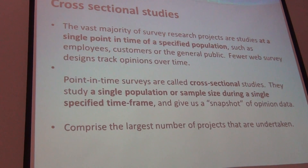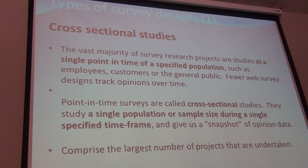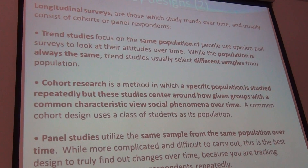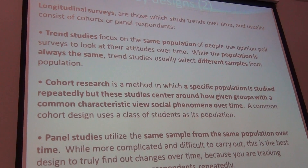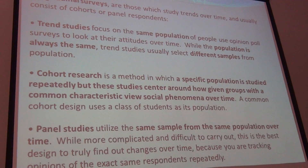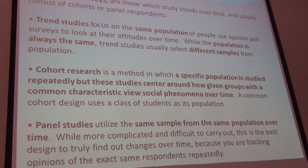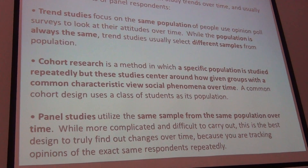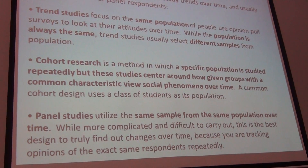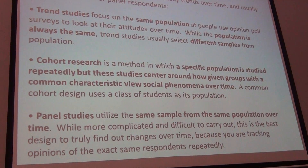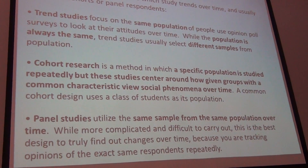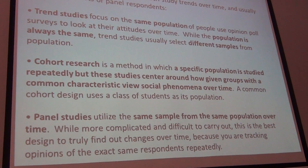To recap: cross-sectional is a snapshot in time. If you want to compare over time and pick up trends, you have three choices. A trend study looks at the same population with different samples over time. A cohort study uses a specific population and follows that cohort as they continue. And the last one is a panel study, where you have the same population and the same sample drawn from that population — not the same cohort as a group, but a specific sample that you draw.